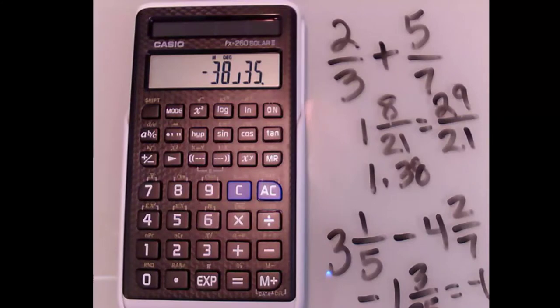It does multiplication, division, all the things you'd expect. That's how you use the fraction button and toggle between mixed number, improper fraction, and decimal forms.